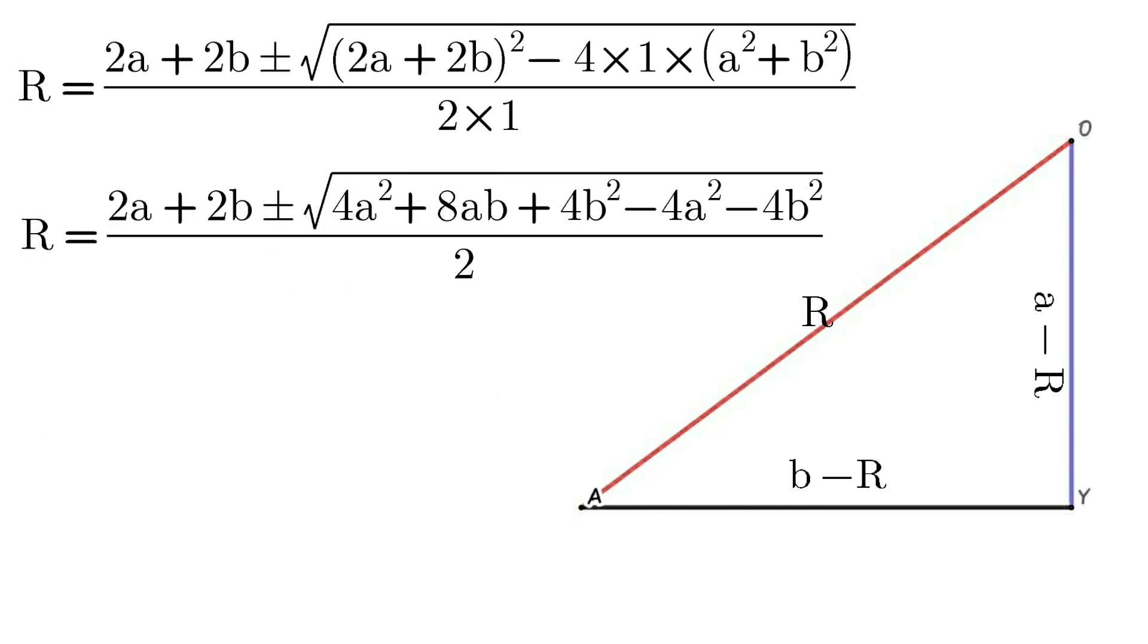We can reduce this equation to R equals 2A plus 2B plus or minus the square root of 8AB, which equals A plus B plus or minus the square root of 2AB.